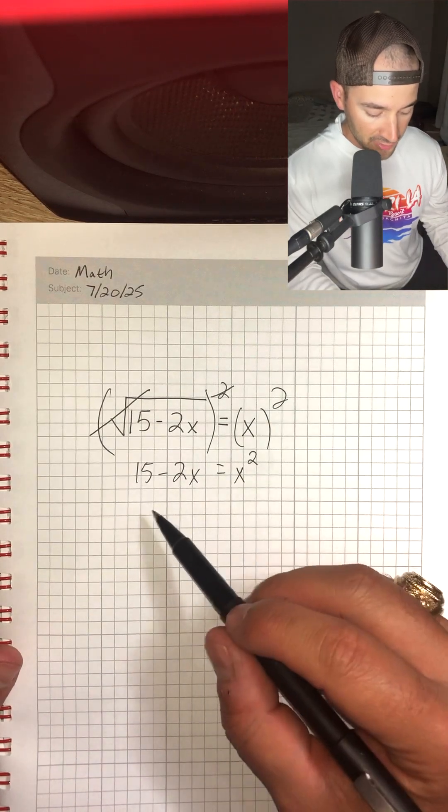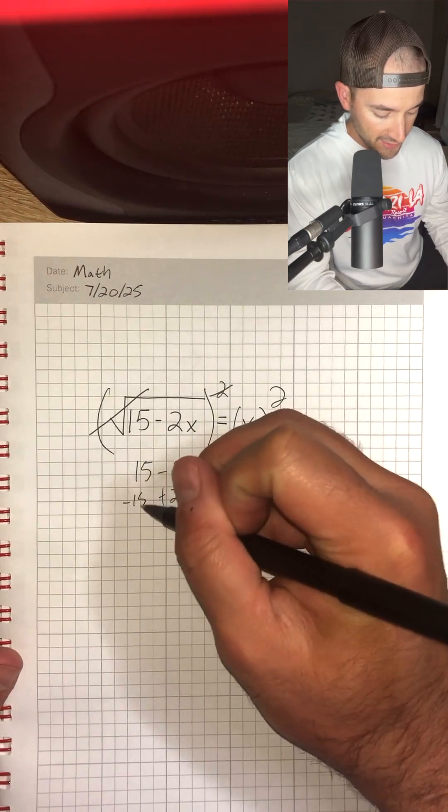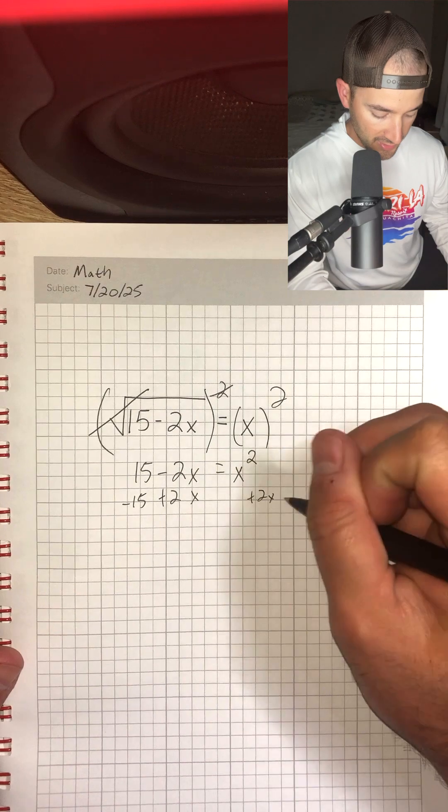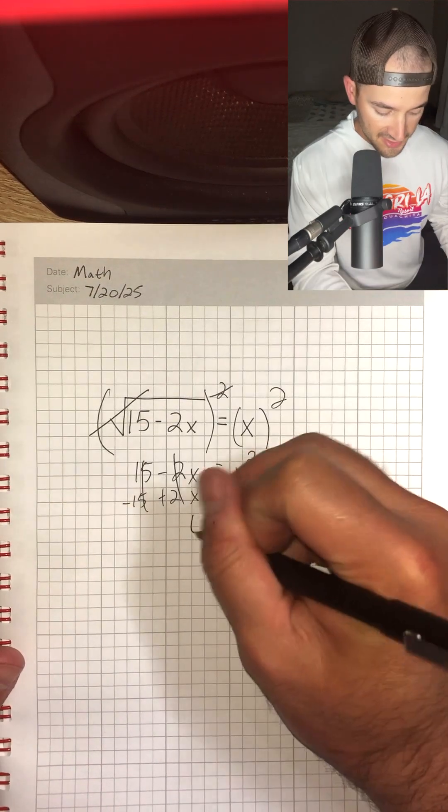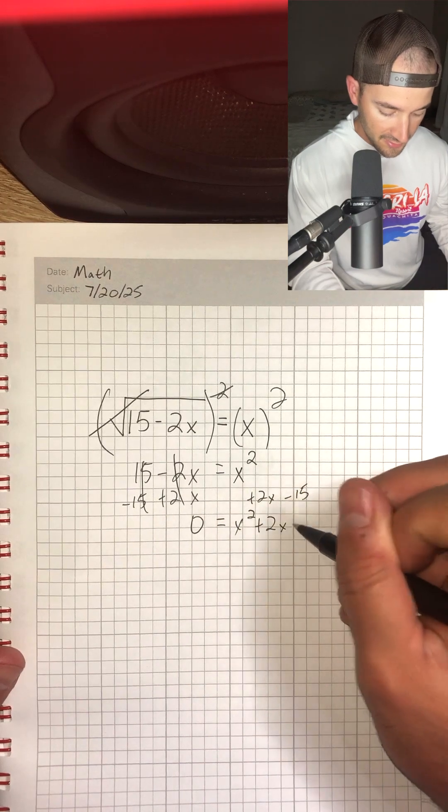Now I'm going to get everything to the same side. So I'm going to add 2x and subtract 15 from both sides. That's going to end up giving me 0 is equal to x squared plus 2x minus 15.